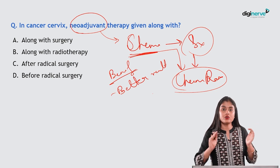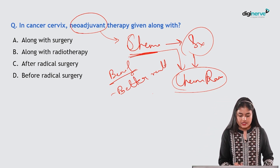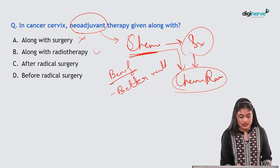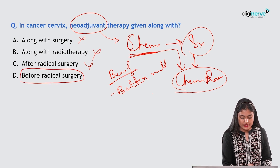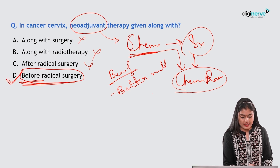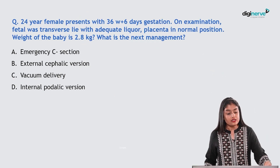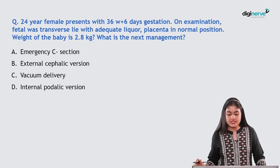So what is the answer? Neoadjuvant therapy is given before radical surgery — chemotherapy is administered prior to surgery. The correct answer is D.